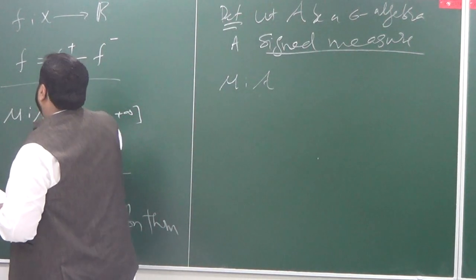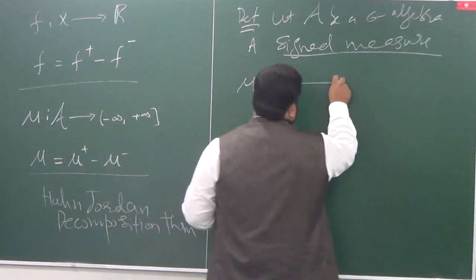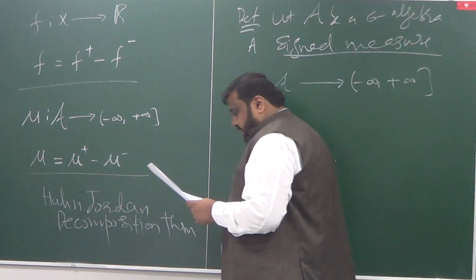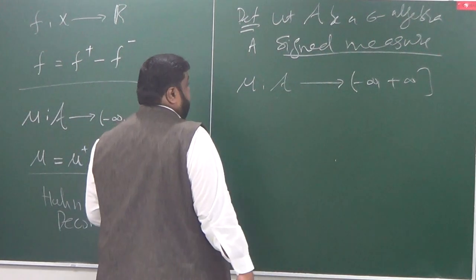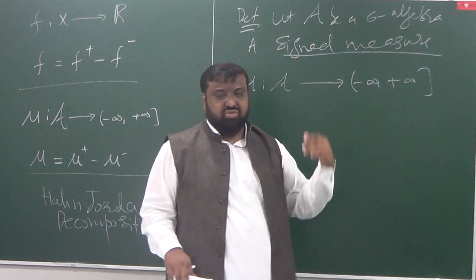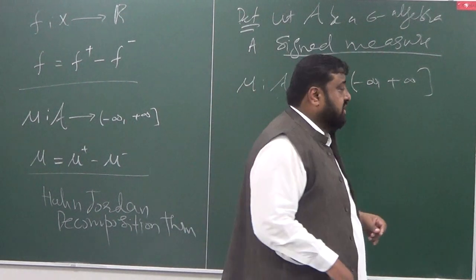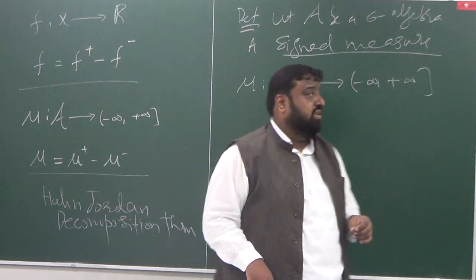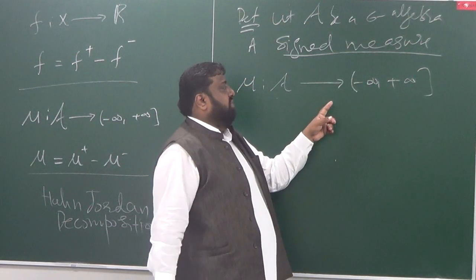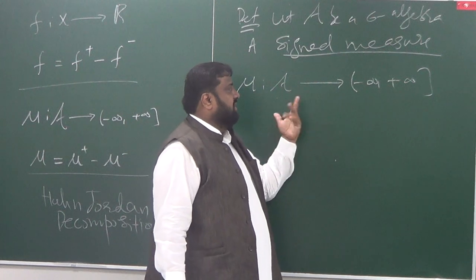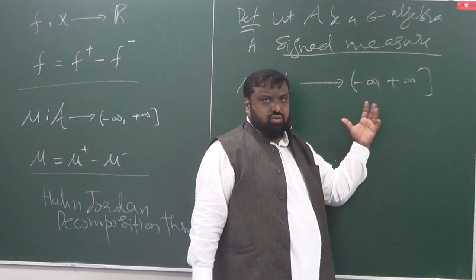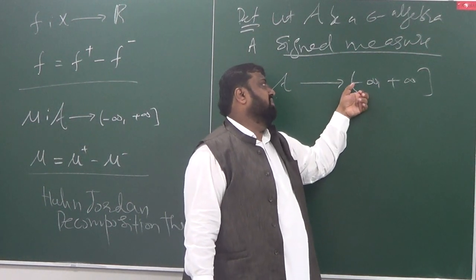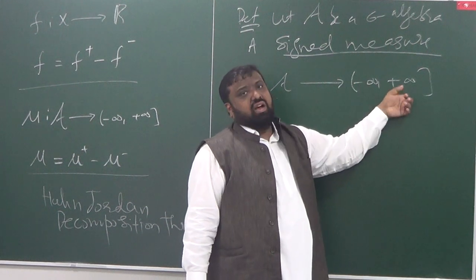It should be a map from the sigma algebra into minus infinity to plus infinity. We are excluding having both minus infinity and plus infinity simultaneously — that's a whole story. If you include both ends of infinity, there will be lots of troubles, so to avoid those troubles, just get rid of one end of infinity. You can include minus infinity or R plus infinity — one of the infinities.